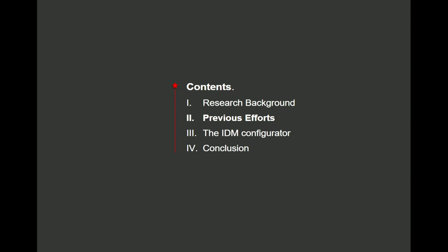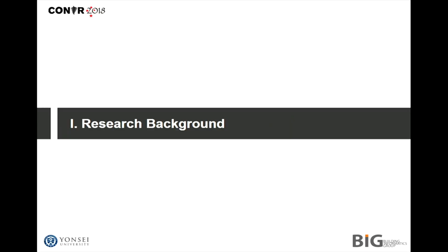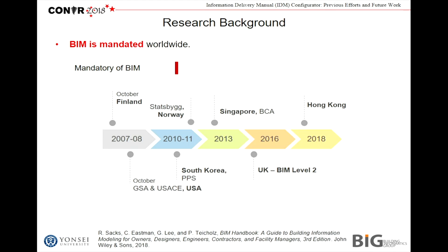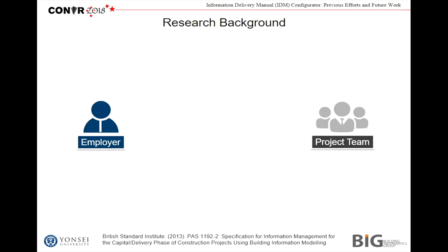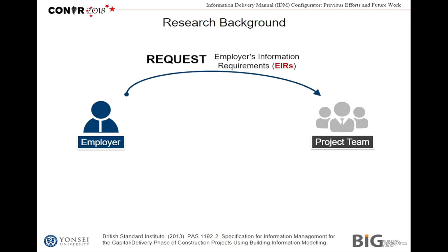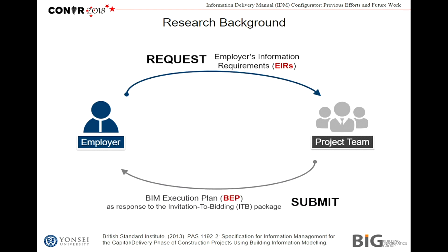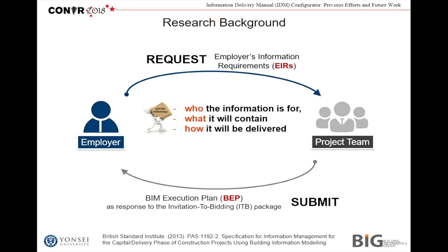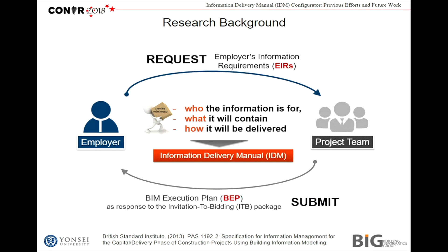I will focus on the previous efforts. As you already know, BIM is mandated worldwide. South Korea mandates BIM from 2010, the UK mandates BIM Level 2 from 2016, and this year Hong Kong has also mandated BIM. According to BIM Level 2 in the UK, employers should request employer information requirements, called EIRs, to the project team, and then the project team should submit the BIM execution plan as a response to the invitation to bid package. Both employers and project team need to know and define who the information is for, what it will contain, and how it will be delivered — and they can find the answer from the information delivery manual.